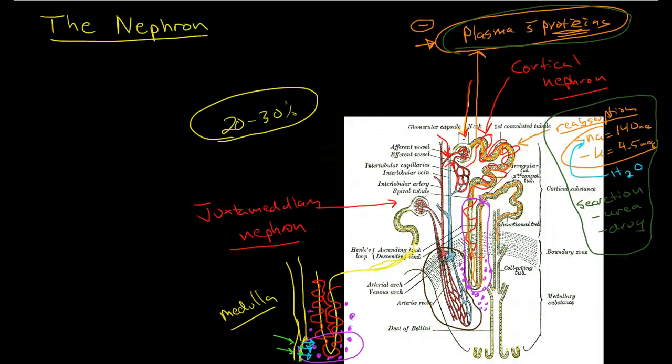So again, the loop of Henle does not itself concentrate urine, but it sets up the situation where urine can be finally concentrated to its highest concentration in the collecting ducts on the way out of the kidney.